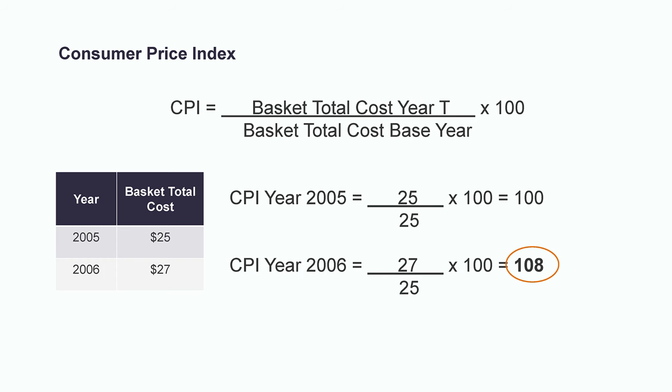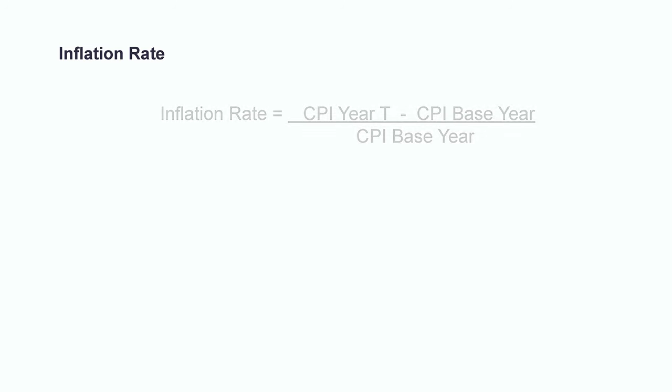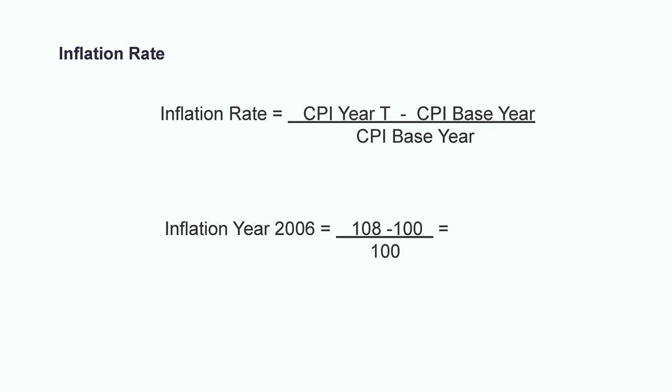What can we do with these numbers? We can measure the inflation rate. The inflation rate formula consists of calculating the difference between the CPI in the year we are measuring versus the CPI of the base year, all divided by the base year CPI. So if we want to measure inflation in 2006, we calculate the difference between 108 and 100, then divide it by 100. This shows us that the inflation rate in 2006 is 8%. In other words, households have to earn 8% more in order to access the same basket of goods as the previous year. The cost of living in 2006 is higher.